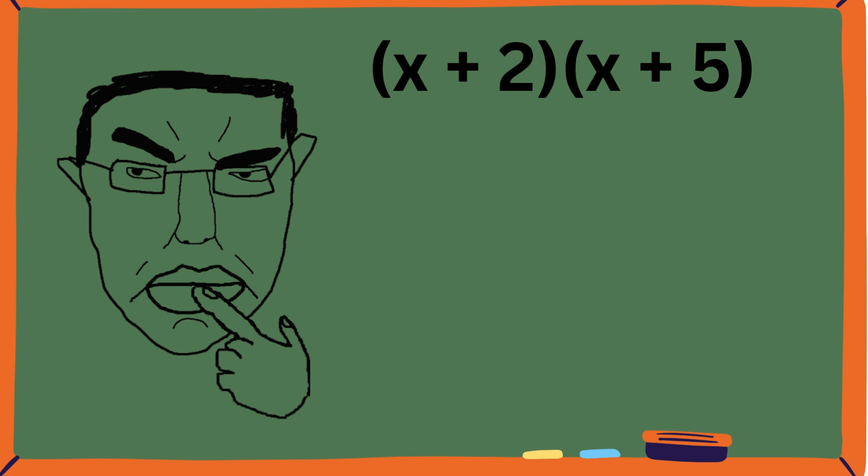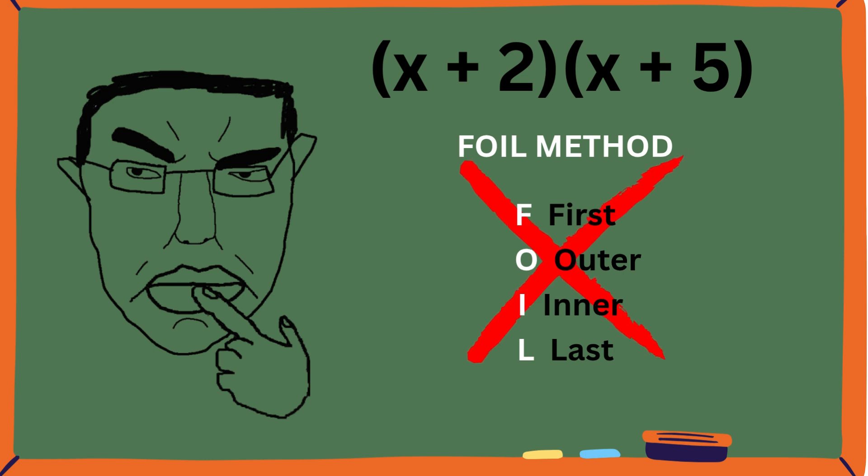Let's start with a typical problem, multiplying binomials. You've probably learned FOIL: first, outer, inner, last. But let's be honest, FOIL is clunky.